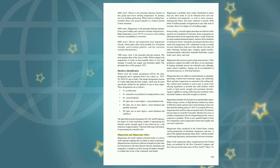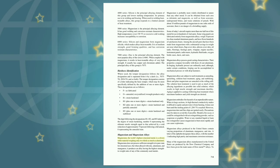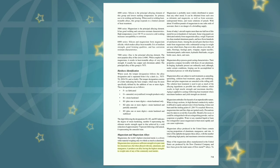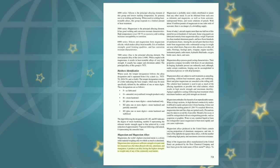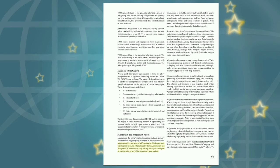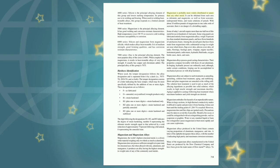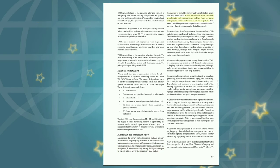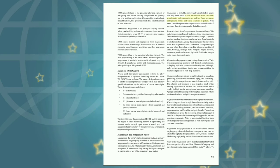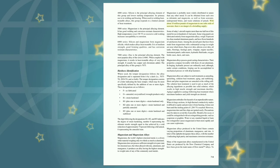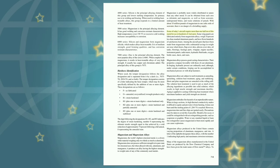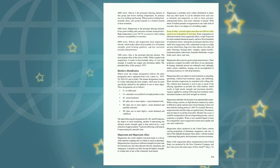Magnesium and magnesium alloys: Magnesium is the world's lightest structural metal, a silvery-white material weighing only two-thirds as much as aluminum. Magnesium does not possess sufficient strength in its pure state for structural uses, but when alloyed with zinc, aluminum, and manganese, it produces an alloy having the highest strength-to-weight ratio of any of the commonly used metals. Magnesium is probably more widely distributed in nature than any other metal, obtainable from dolomite, magnesite, seawater, underground brines, and waste solutions of potash. With about 10 million pounds of magnesium in one cubic mile of seawater, there is no danger of a dwindling supply. Some of today's aircraft require more than one-half ton of this metal for use in hundreds of vital spots.